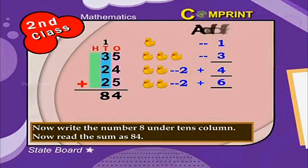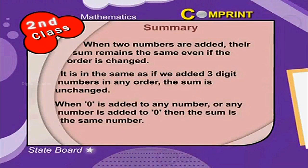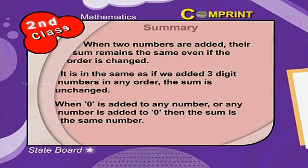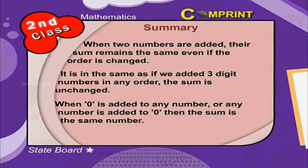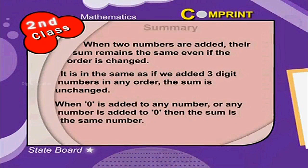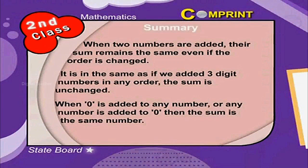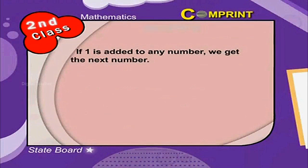Children, let us summarize the points. When 2 numbers are added, their sum remains the same even if the order is changed. It is the same if we add 3 digit numbers in any order — the sum is unchanged. When 0 is added to any number, or any number is added to 0, the sum is the same number. If 1 is added to any number, we get the next number.